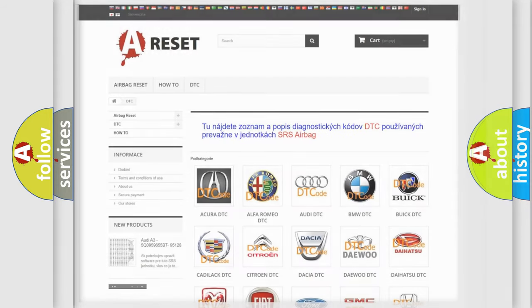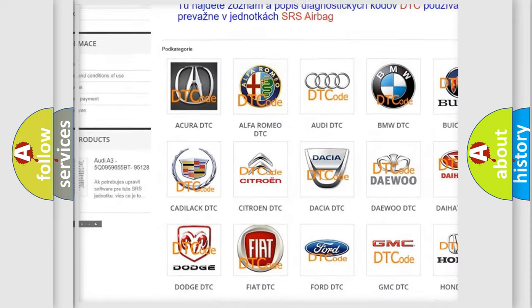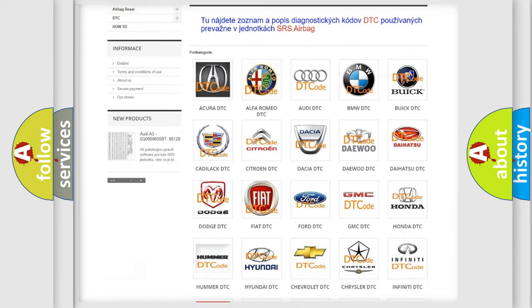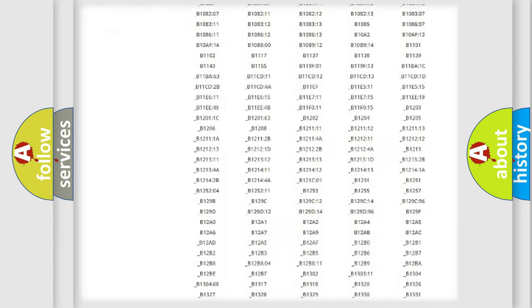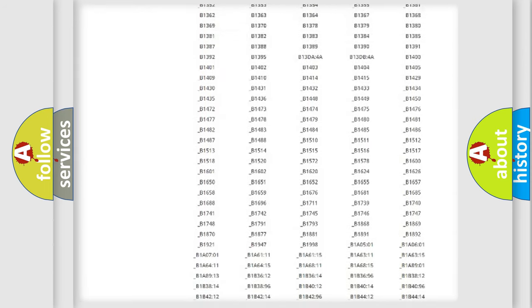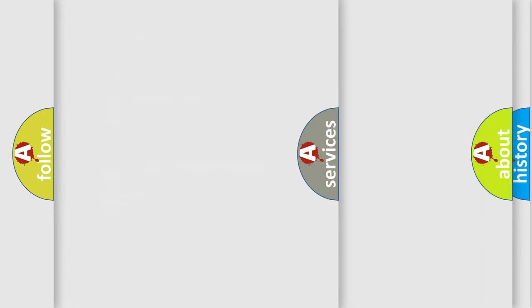Our website airbagreset.sk produces useful videos for you. You do not have to go through the OBD2 protocol anymore to know how to troubleshoot any car breakdown. You will find all the diagnostic codes that can be diagnosed in Jeep vehicles, and also many other useful things.